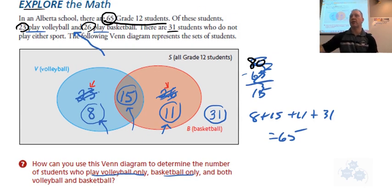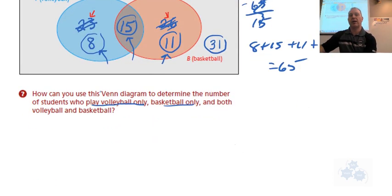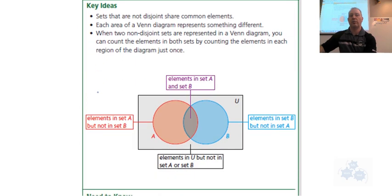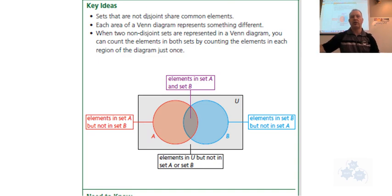Does everyone understand that first section? Venn diagrams can help us organize data. Now let's go over a few important things from the summary of the key ideas of the chapter. Sets that are not disjoint are sets that share common elements, so we have a region that overlaps and there will be some elements in there. Each area of a Venn diagram represents something different.